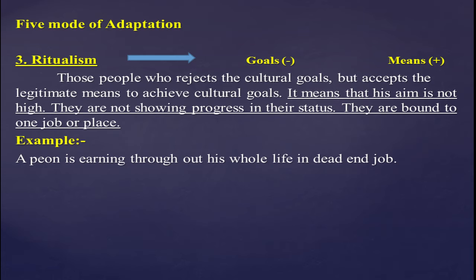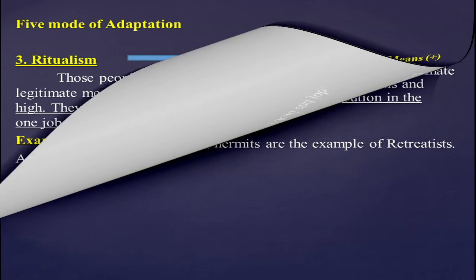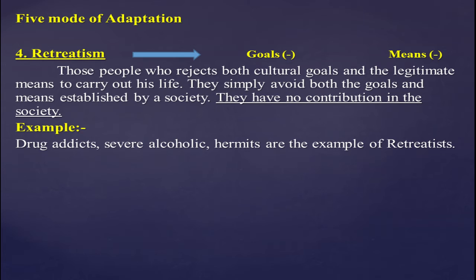The fourth mode of adaptation is retreatism, where both goals and means are negative. These are those people who reject both the cultural goals and the legitimate means to carry out their life. They simply avoid both the goals and means established by society and have no contribution to society. For example, drug addicts — they don't have any goals and they don't have a positive legal way of life.